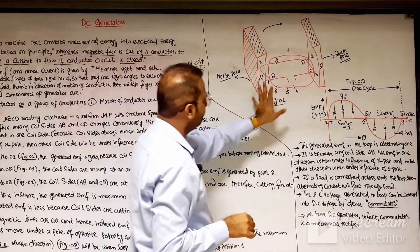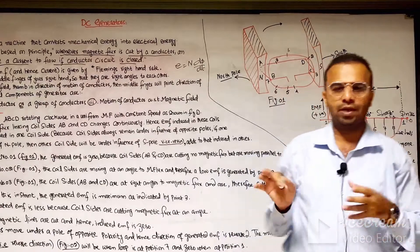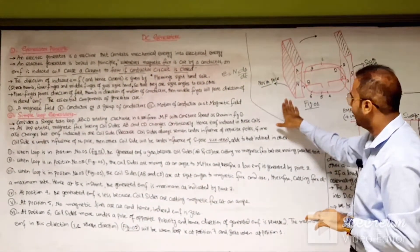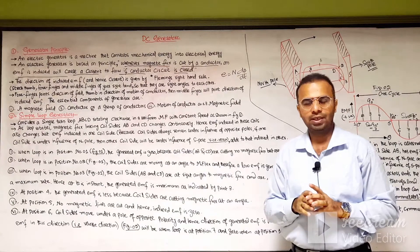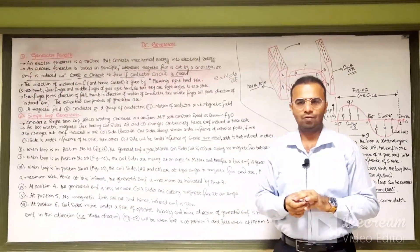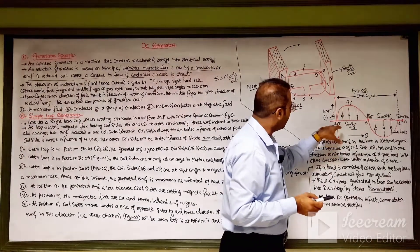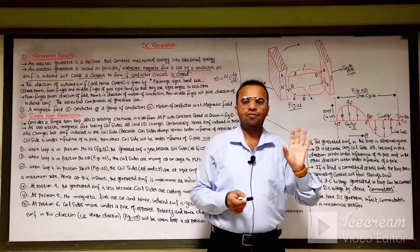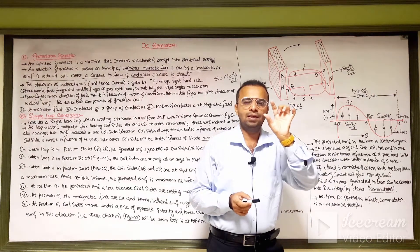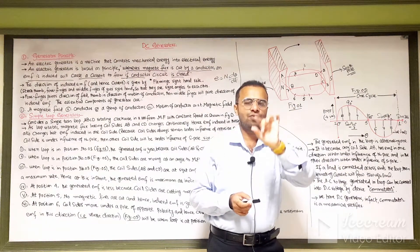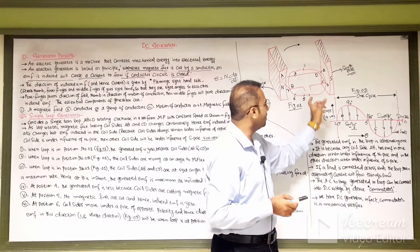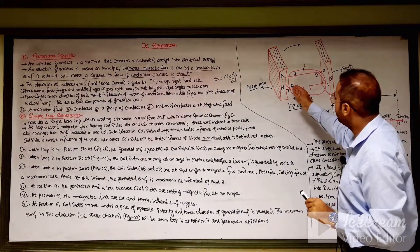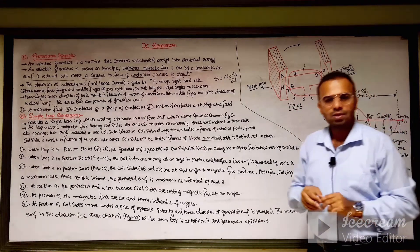This was the simple loop generator which produces the AC sine wave, generating the positive half cycle and the negative half cycle of the AC supply voltage. The complete cycle is produced by a single turn ABCD rotating clockwise in a uniform magnetic field, with AB under the influence of the north pole and CD under the influence of the south pole.